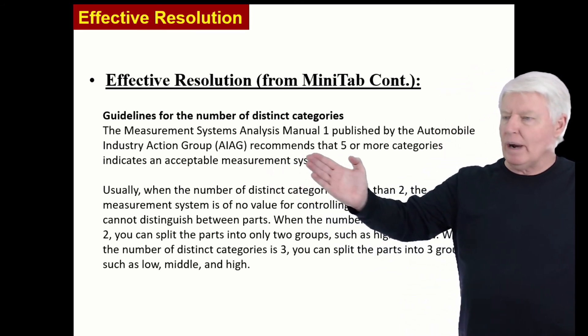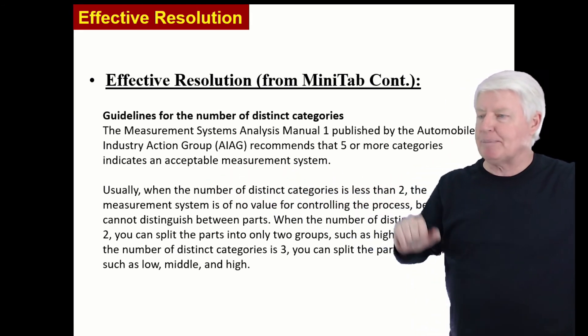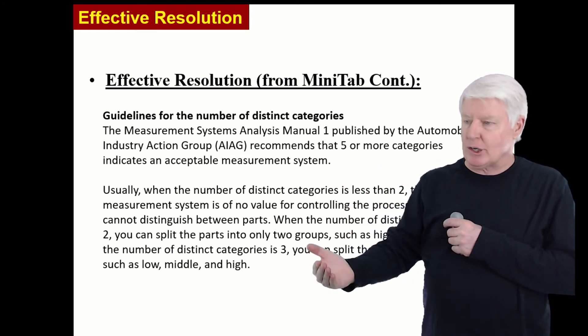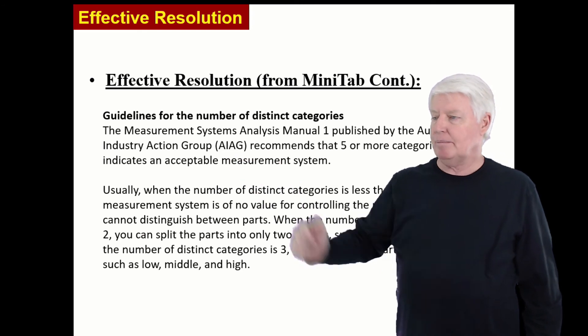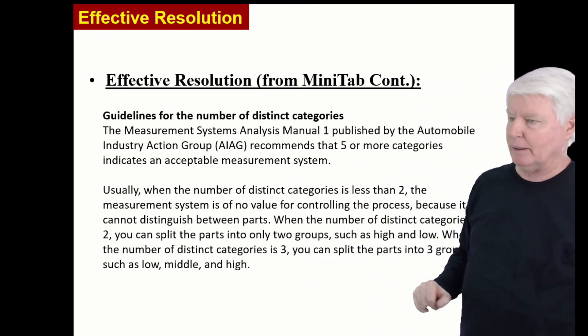So AIAG recommends what? That five or more categories indicates an acceptable measurement system. So if you're going to say something is measurable from the NDC standpoint, it should be five or greater, according to AIAG. And that's what most companies follow, by the way.